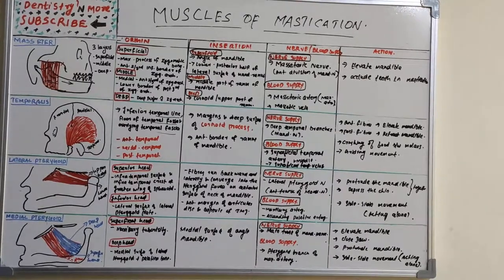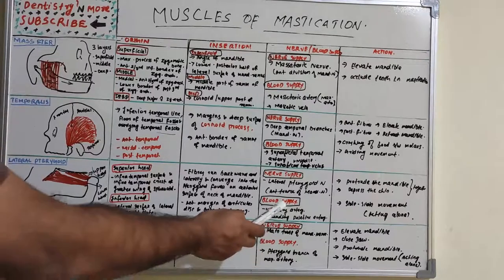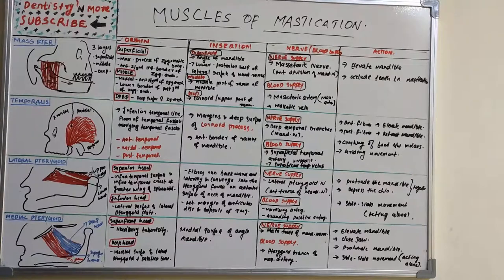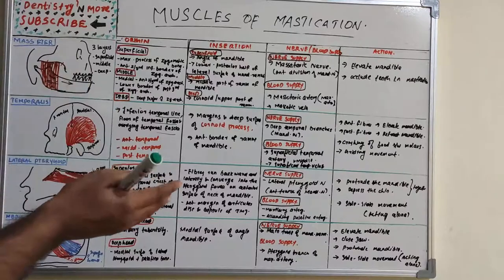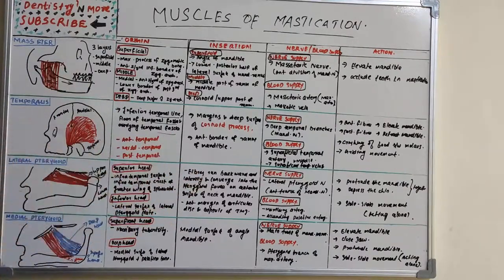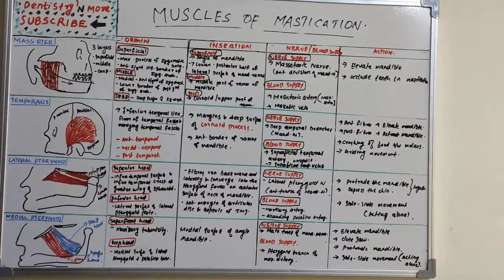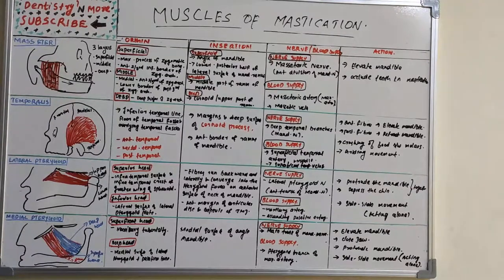The nerve supply of the lateral pterygoid is the lateral pterygoid nerve, a branch of the anterior trunk of the mandibular nerve. Blood supply is via the maxillary artery and ascending palatine artery. When acting together, these muscles protrude the mandible and depress the chin. When acting alone and alternately, they produce side-to-side movements of the mandible.